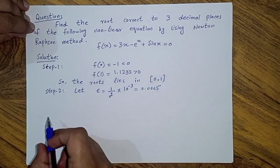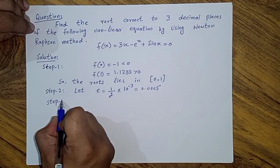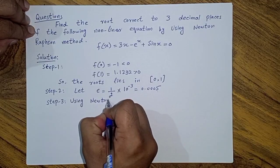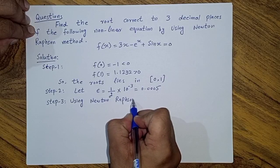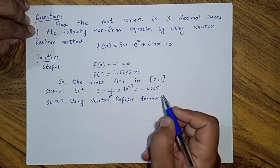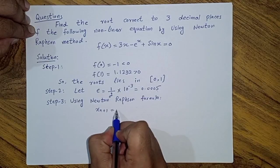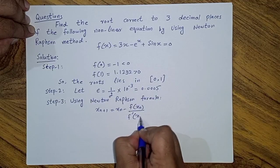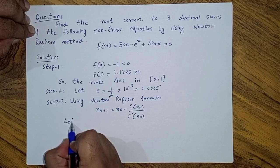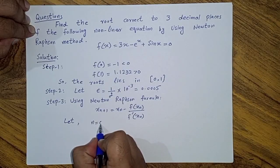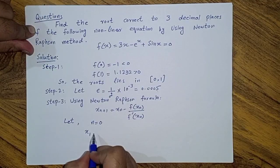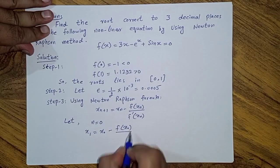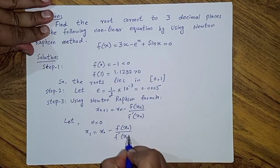Step 3: using the Newton-Raphson formula, x_(n+1) = x_n - f(x_n) / f'(x_n). Let n = 0, so x_1 = x_0 - f(x_0) / f'(x_0). We call this equation number 1.